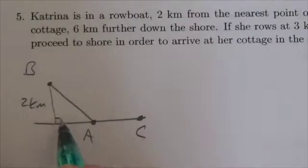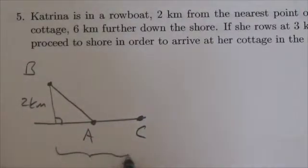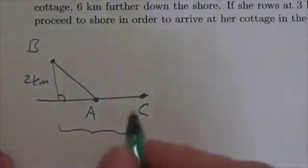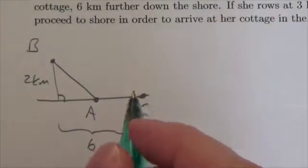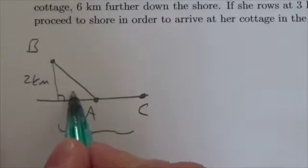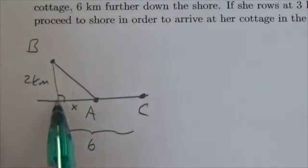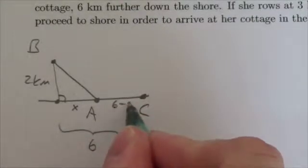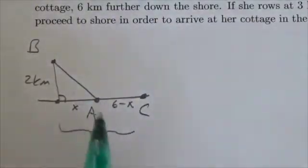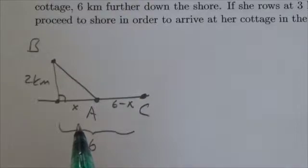We do know that this distance here, if you can see that there, is six kilometers. And so what we might do here is let's make this distance here X from this point straight across to A is X. And then this over here is going to be six minus X. Now there are other ways you could have done that, but I think this ends up giving us a situation that requires the least amount of work.